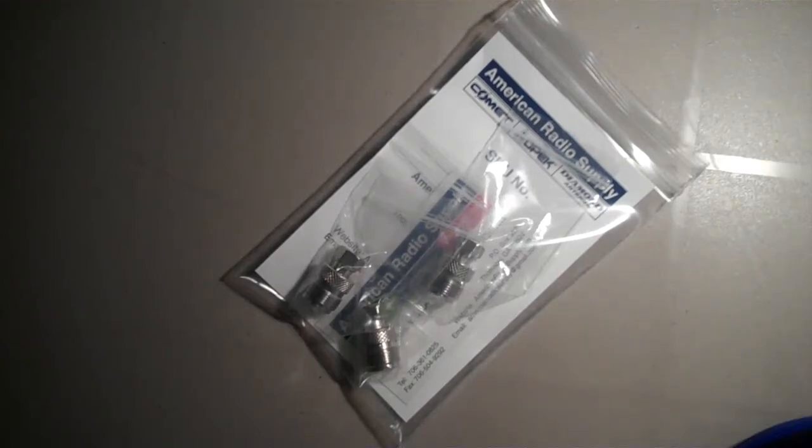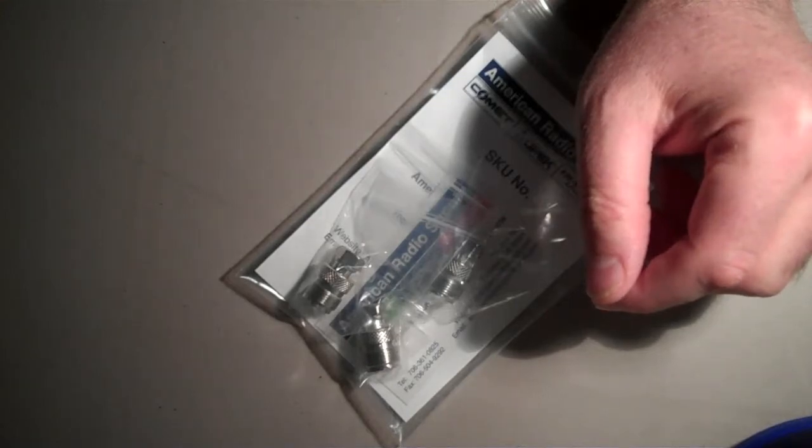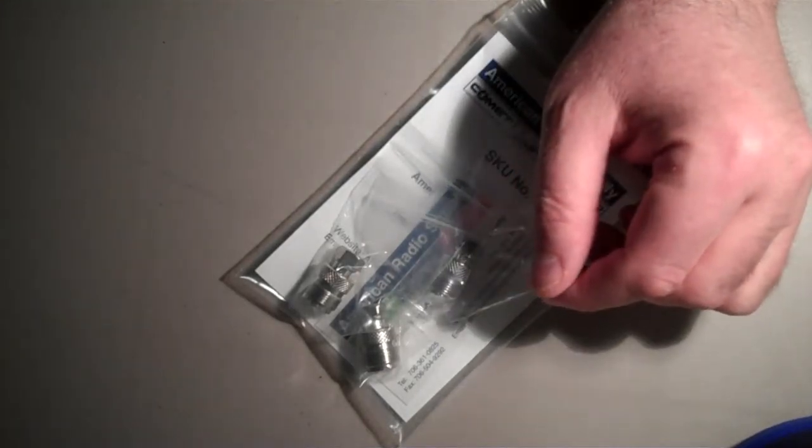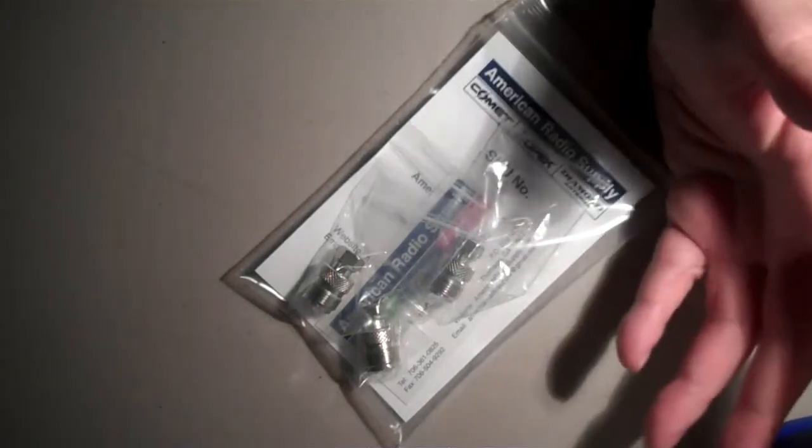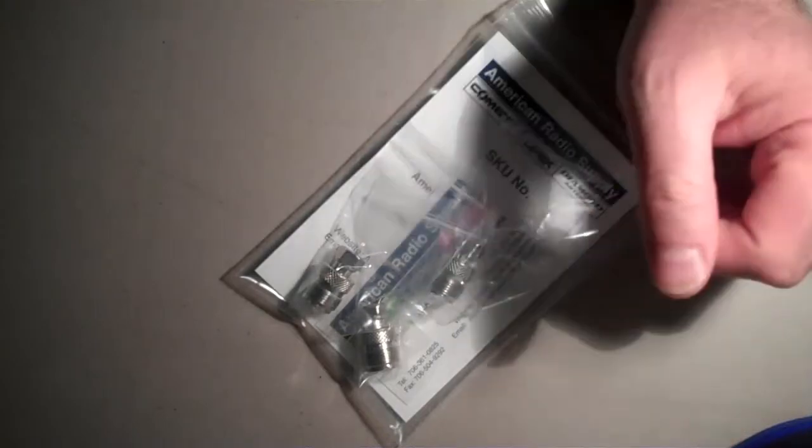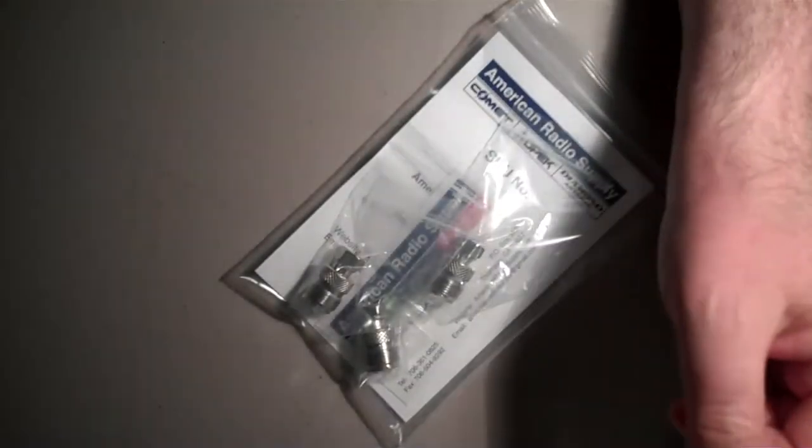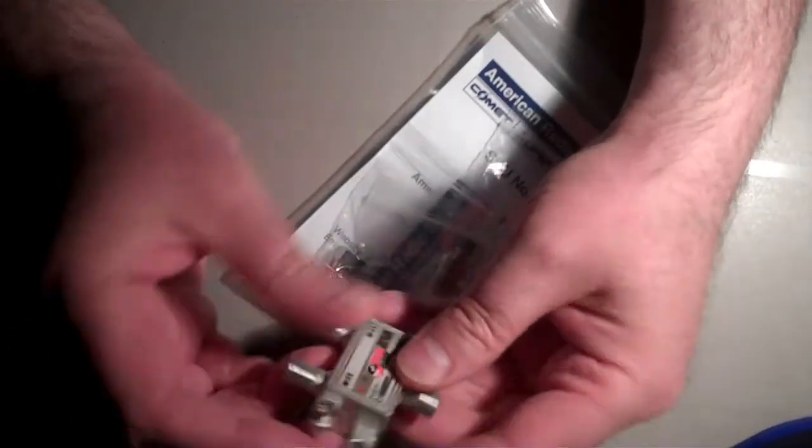I looked online for combiners, splitters, multi-duplexers, whatever you want to call them, and they're not cheap. I saw some for about $180 a piece and that's just to split it two ways. Well, I've got a cheaper way to do this.